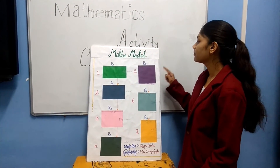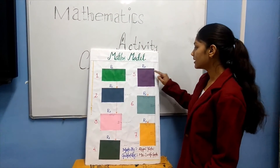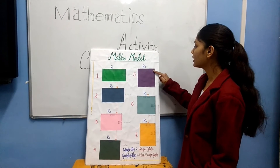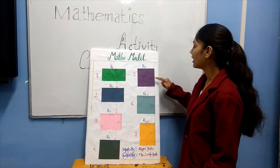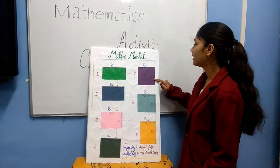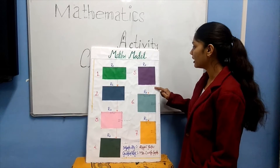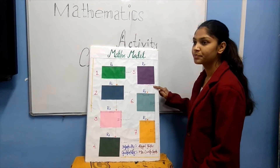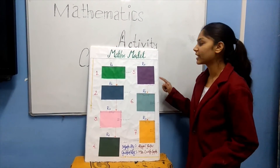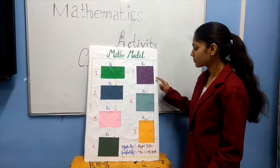R5 has the maximum area. Its length is 12cm and breadth is 12cm, giving an area of 144cm squared. So R5 has the maximum area.